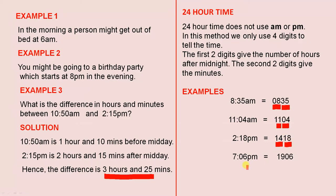7:06 PM is in the evening. The 19 tells you that it is 19 hours after midnight, and here you have the extra 6 minutes. So all you need are 4 digits — the first two give the number of hours after midnight, and the second two give the number of minutes after the designated hour.